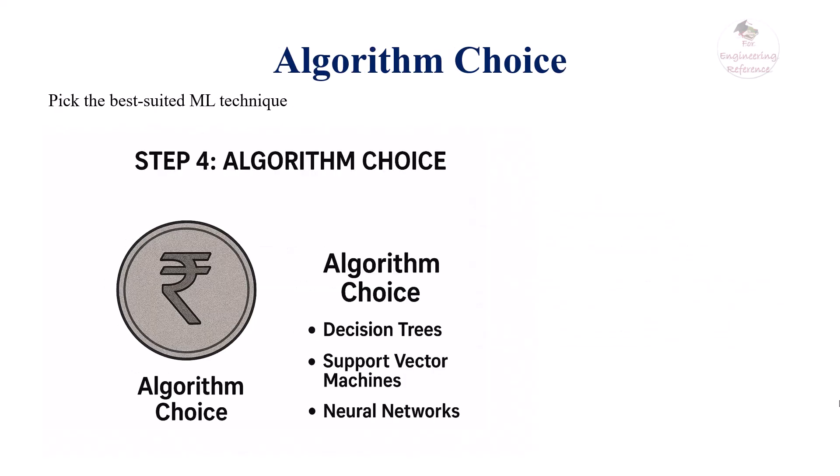Next, we select the appropriate algorithm. Depending on the nature of the data and the problem—classification, regression, or clustering—we select a suitable algorithm, such as decision trees, support vector machines, or neural networks. Understanding the strengths and limitations of each algorithm helps in making the right choice.